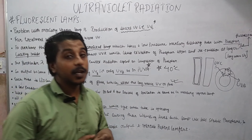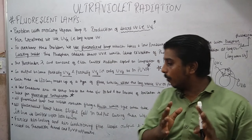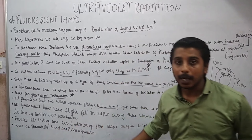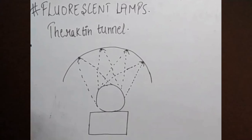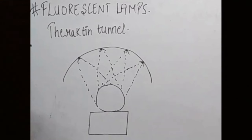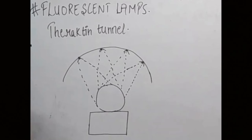Now we will study about the theractin tunnel and UVA apparatus. The theractin tunnel consists of a semi-cylindrical frame which has four fluorescent tubes, and each tube has its own reflector so that the whole irradiation is directed toward the body.